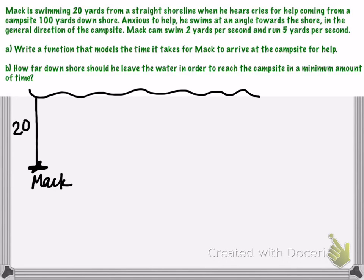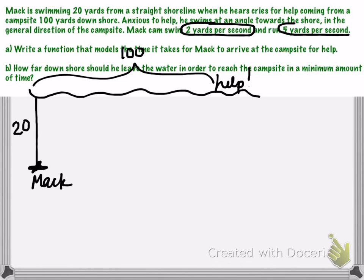Then he hears cries for help coming from a campsite 100 yards down shore. So here we have somebody needing help and that distance down shore is 100. Then he can swim 2 yards per second and run 5 yards per second. These values are not distances, but rather these are rates. These are how fast he can run and swim.